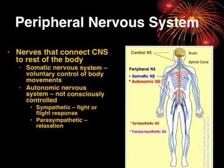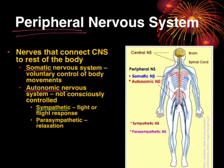The peripheral nervous system — peripheral, like your peripheral vision — these are the nerves that connect the central nervous system to everything else in your body. There's the somatic nervous system, which is the voluntary control of body movements, and then the autonomic nervous system, which covers all the parts that are not consciously controlled. That can be divided into sympathetic and parasympathetic. The peripheral nervous system is responsible for sending messages to the central nervous system and then sending them back out, and there are specific neurons that do that.